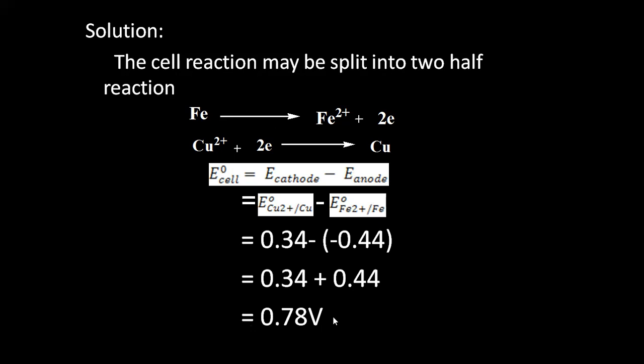The main important thing is to identify which is the anode and which is the cathode. If you cannot determine it from the reaction, there is one more way: always remember that higher the standard reduction potential value, it will always act as cathode. Here, copper has +0.34 V and iron has −0.44 V, so iron acts as anode and copper acts as cathode. The electrode with the higher standard reduction potential always acts as cathode.